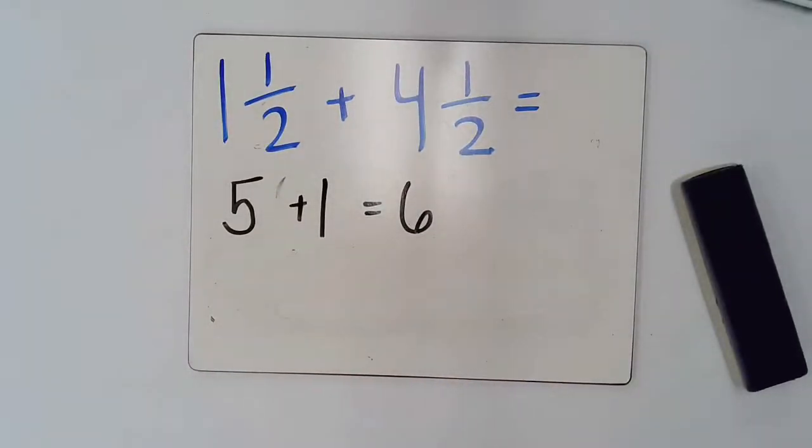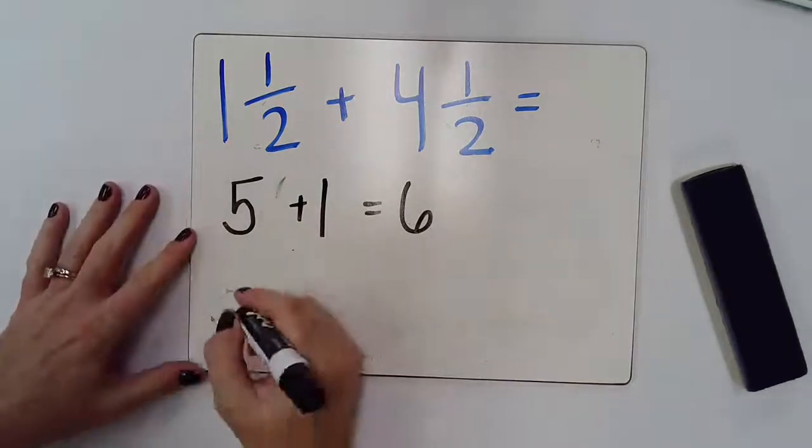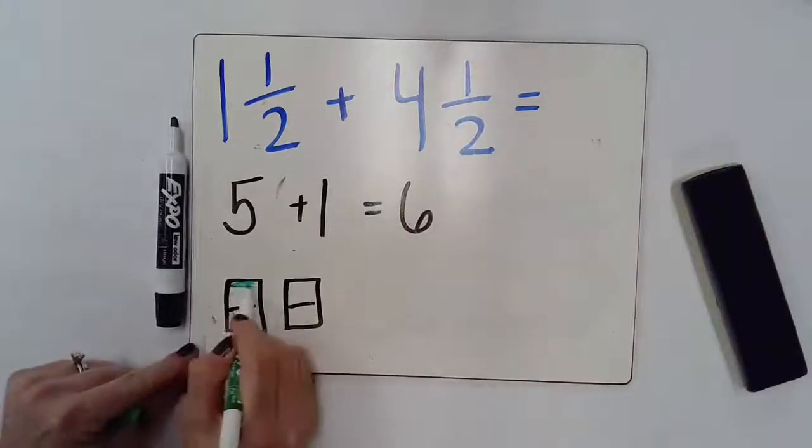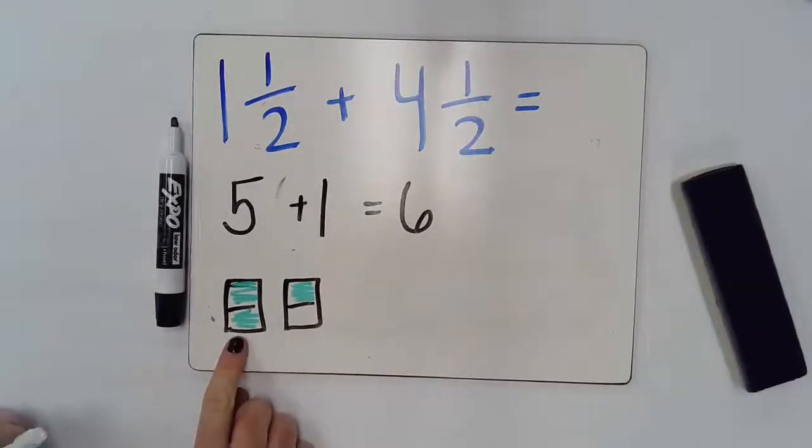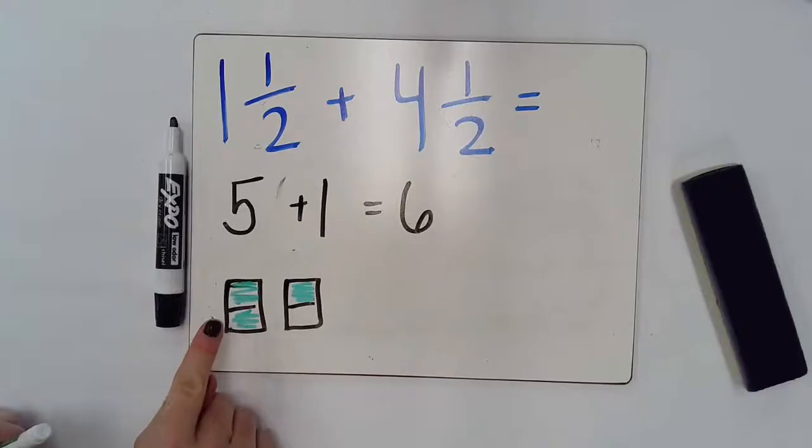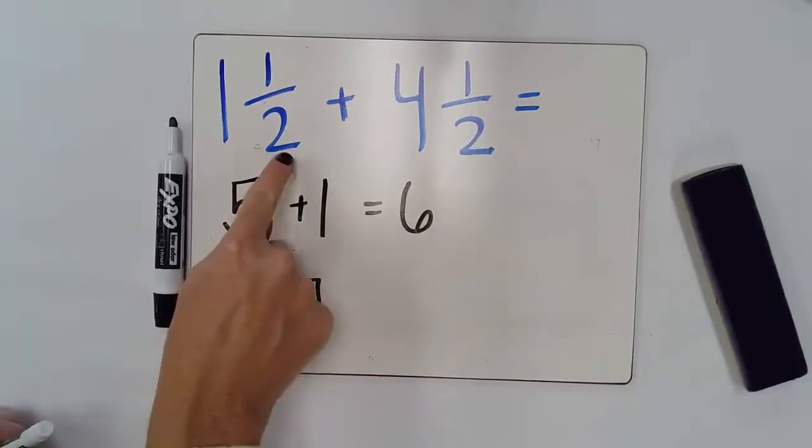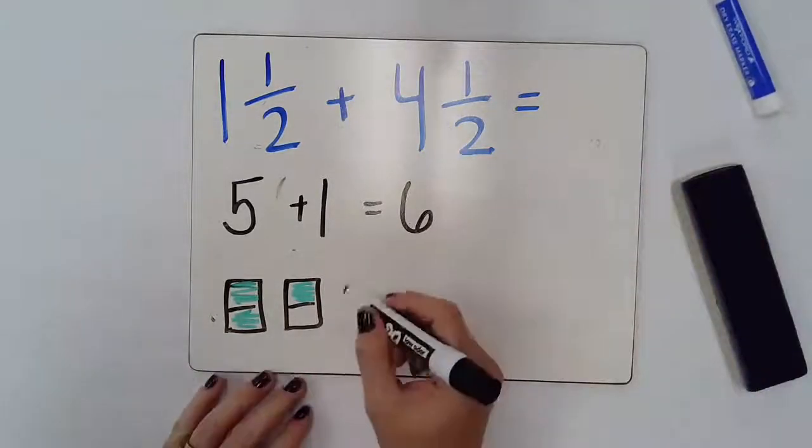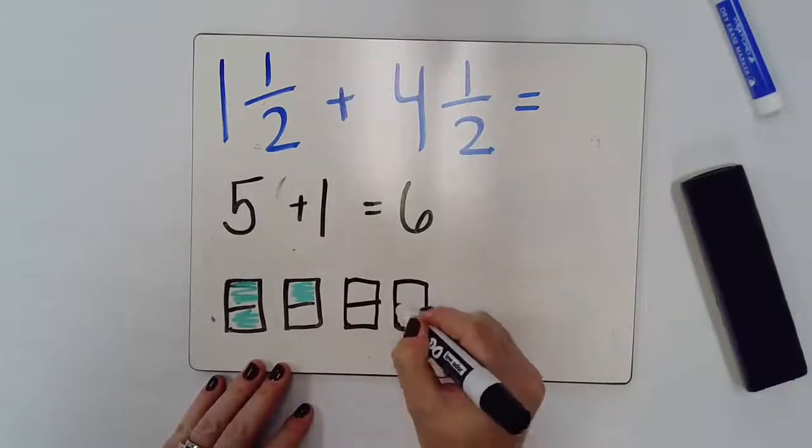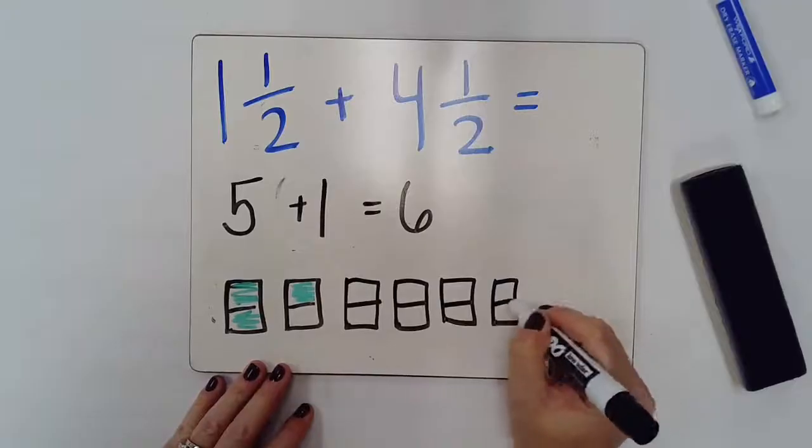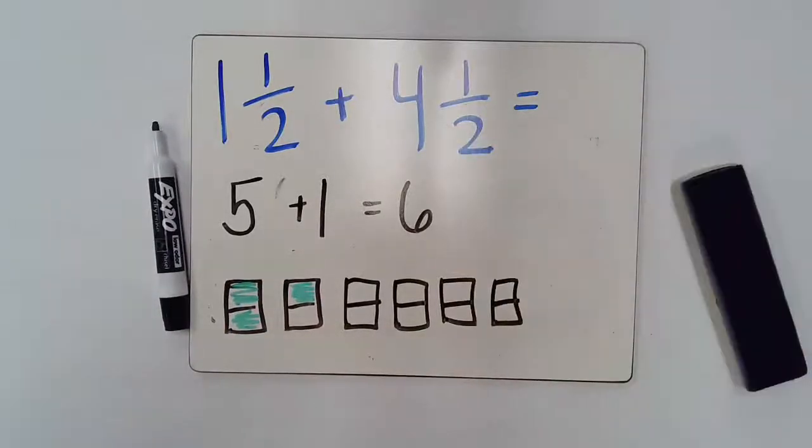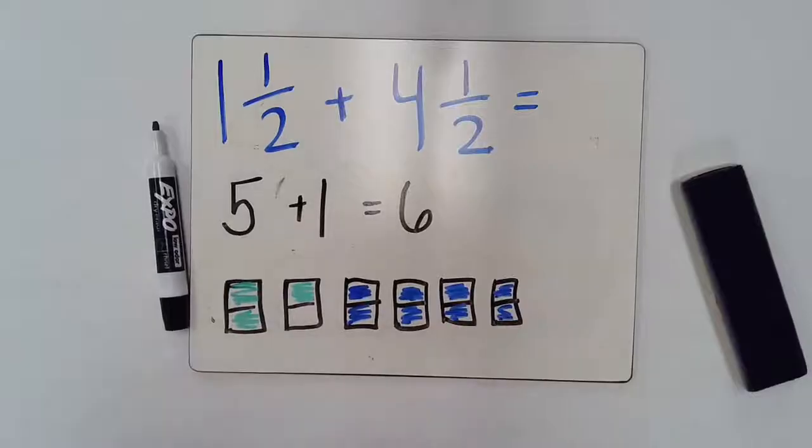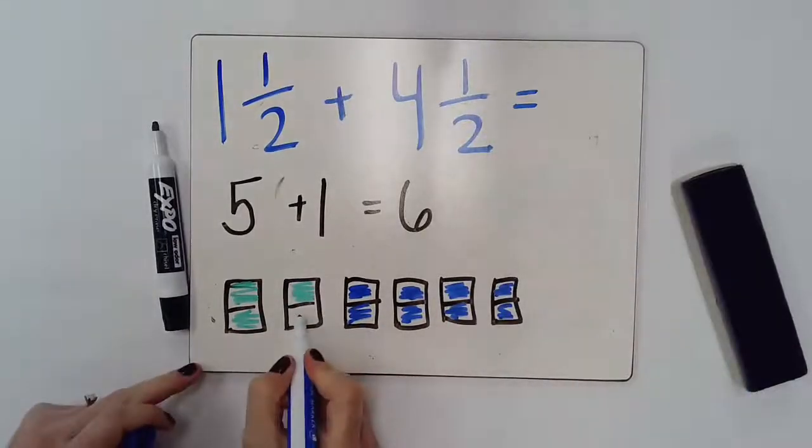I can also check my answer by drawing this out. So, I'm going to draw out 1 and 1 half and I'm going to color that in to show that. And the reason I broke this whole into 2, it's because we're working with that denominator 2. If we were working with thirds, I would have broken these holes into 3 parts, but it's still a whole. Now, I'm going to draw my 4 holes here.